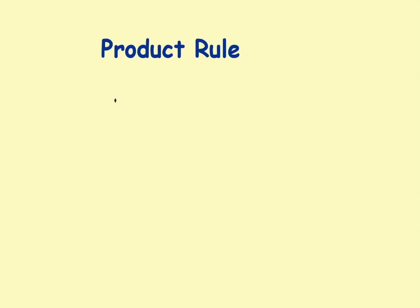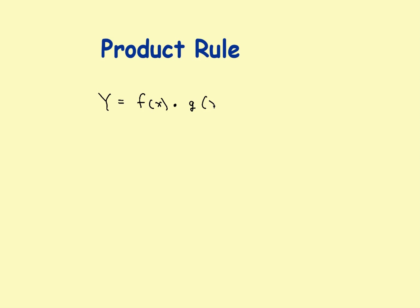Let's take a quick look at the product rule. What the product rule is: if you had an original function, suppose it was y, and y was equal to the product of two things — you had an f of x times a second function, a g of x.